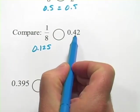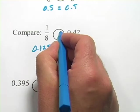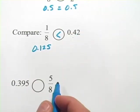How does that compare to 0.42? Well, 0.4 is a lot bigger than 0.1. So one eighth is less than 0.42.